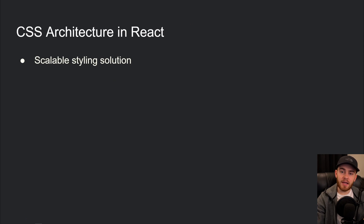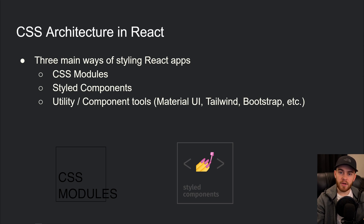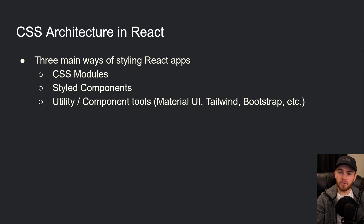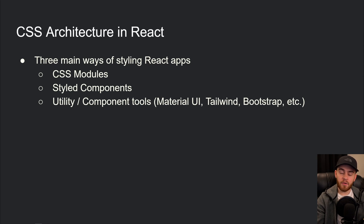Welcome to this video where we're going to talk about how we can architect a scalable solution when it comes to styling in React applications. Roughly you have three ways to style your React apps: CSS modules, styled-components or Emotion, and utility and component tools such as Material UI, Tailwind, Bootstrap, or Chakra UI. In this video we'll mainly focus on CSS modules and styled-components.